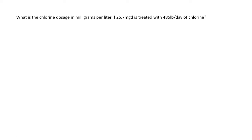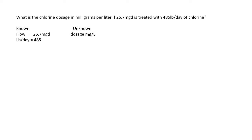What is the chlorine dosage in milligrams per liter if 25.7 MGD is treated with 485 pounds per day of chlorine? With all word problems, pull out your knowns and unknowns. What we know is there's a flow of 25.7 MGD and the pounds per day is 485. What we're looking for is the dosage in milligrams per liter.